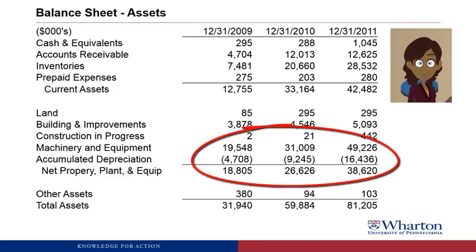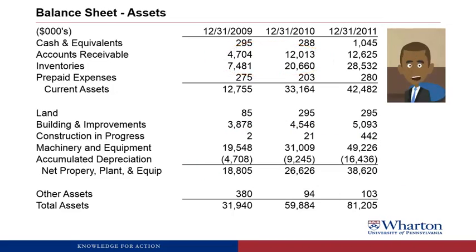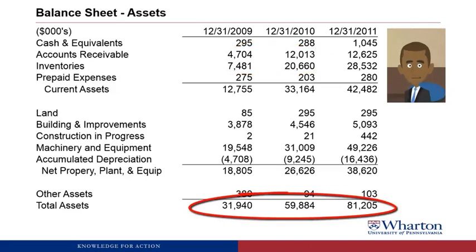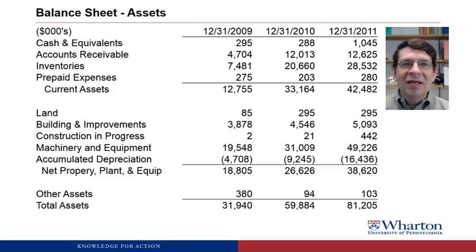It certainly appears that PP&E has grown substantially. There also is a huge jump in inventory and accounts receivable after 2009. Yes, but the whole company has gotten bigger — look at total assets. My point is that it's a good starting place to look at the balance sheet because there are dramatic year-on-year changes in some accounts, as noted with accounts receivable, inventory, and PP&E. It is hard to analyze because the overall company is growing so much. Later in the video, we'll come up with a technique that will help remove some of the effects of this growth and give us a better picture.